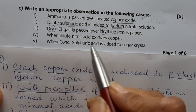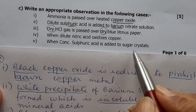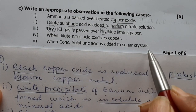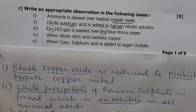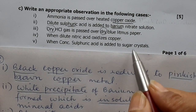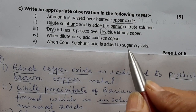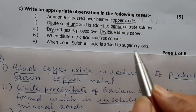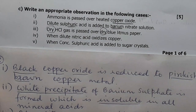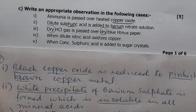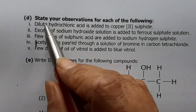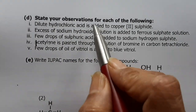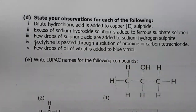When concentrated sulfuric acid is added to sugar crystals: concentrated sulfuric acid leaves a black spongy mass of carbon — that will be the observation. Now let us go to Question 1d.